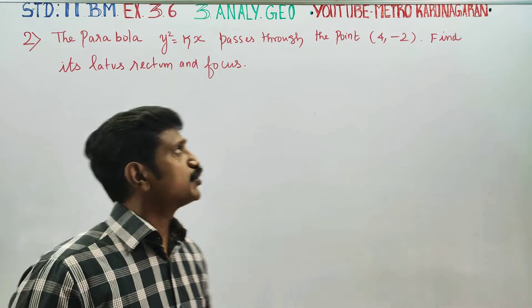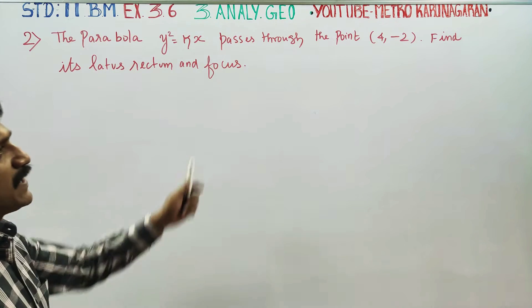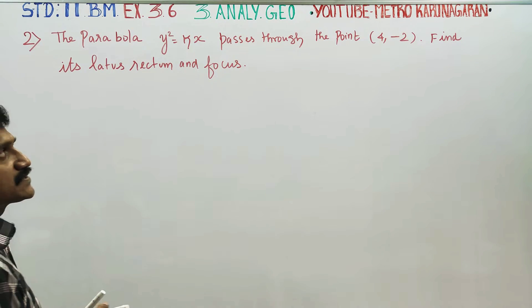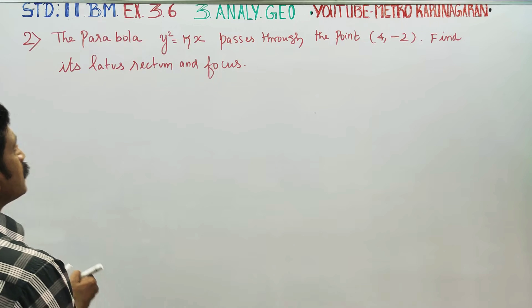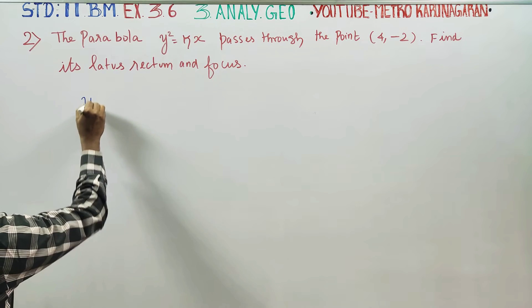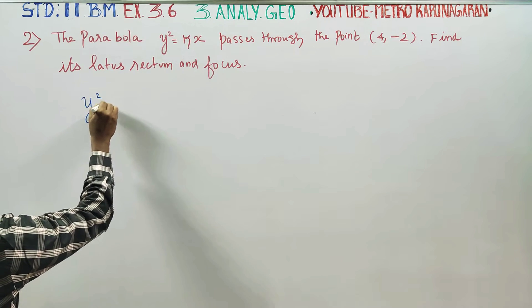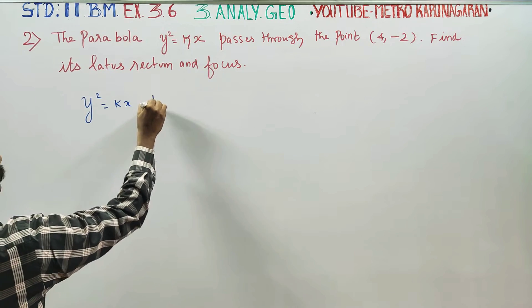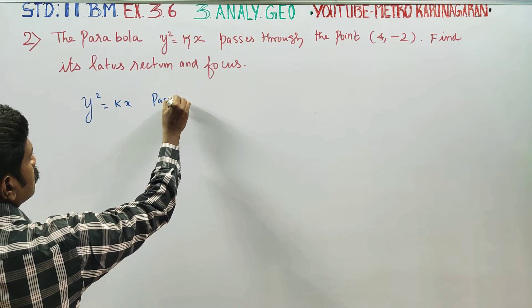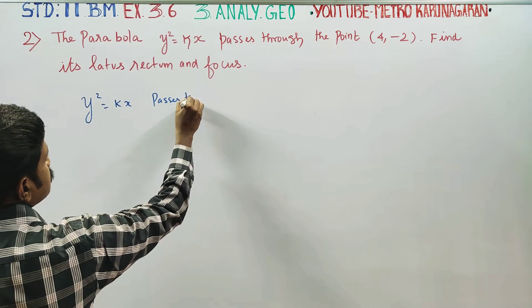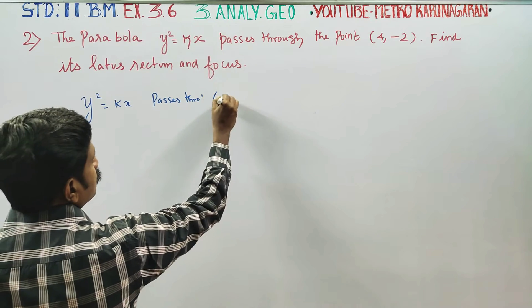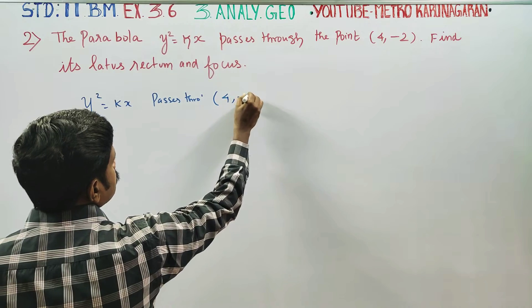The parabola y² = kx passes through the point (4, -2).